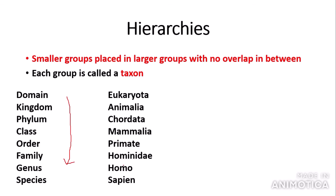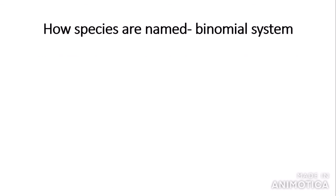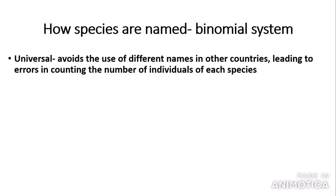As we go down the taxonomic system it gets more specific, so two species that share the same genus are more closely related than two species that just share the same family but have a different genus. To put this into context, here is the taxonomic system for a human: Eukaryota, Animalia, Chordata (meaning we have a backbone), Mammalia, Primate, Hominidae, Homo sapiens. You can recognize those last two words — the genus and species — which form the scientific name for humans.